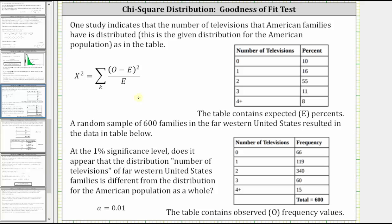One study indicates that the number of televisions that American families have is distributed as in the table shown on the right. In the first column we have the number of televisions, and in the second column we have the percent. This table contains the expected percentages. A random sample of 600 families in the far western United States resulted in the data shown below, where the first column gives the number of televisions and the second column gives the frequency out of 600.